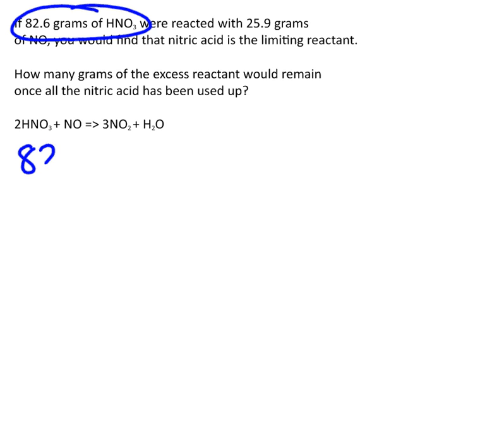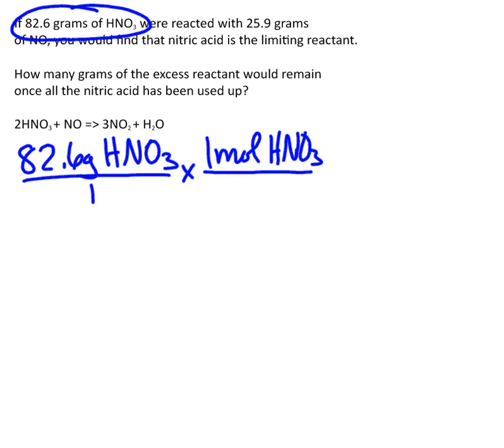So I'm going to go 82.6 grams of nitric acid over 1. I need to get to moles of nitric acid. So I use the molar mass of nitric acid, which is 63.02 grams of nitric acid.